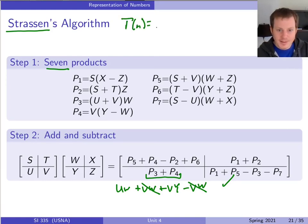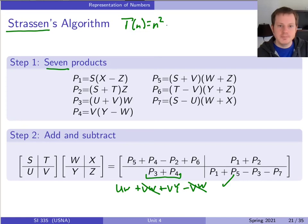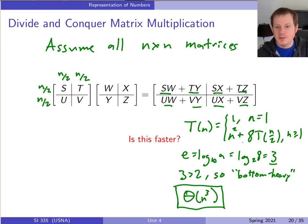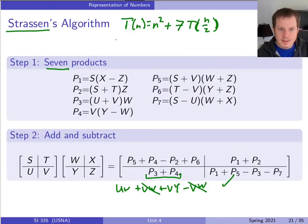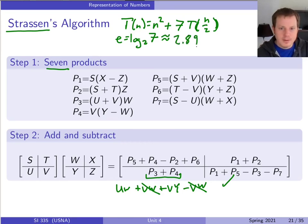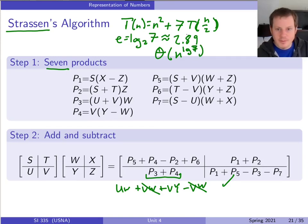The running time of Strassen's algorithm has N squared extra work for the additions and subtractions — it's still N squared since all sub-matrices are at most N by N — plus seven times T of N over two. All that really changed is that we now have seven recursive calls instead of eight. So E is now log base two of seven, which is approximately 2.81, less than three. This is still a bottom heavy recurrence, but we get big theta of N to the log base two of seven, a slight improvement over N cubed.